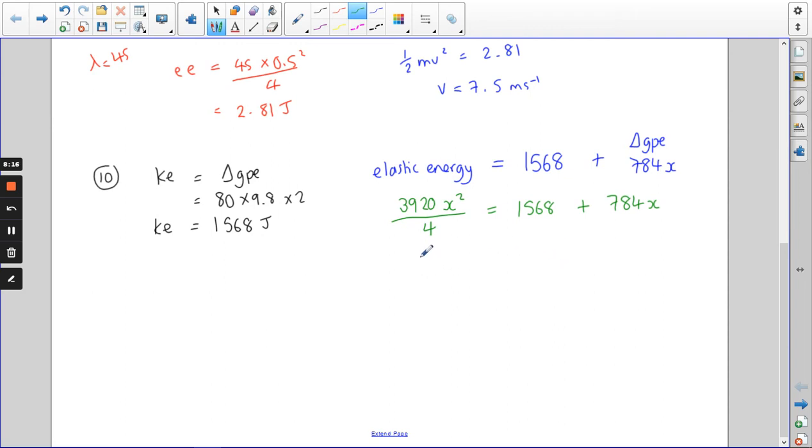If you rearrange that, you can make a quadratic. So you can get it into this form: 980 X squared minus 784 X minus 1,568 equals 0. You can use the quadratic formula to find that a solution for X there is 1.73 metres. So that's how much further he fell. But the trick is to realise that the energy going into the string is only coming from one place, really. It's coming from any GPE that he's losing by falling.